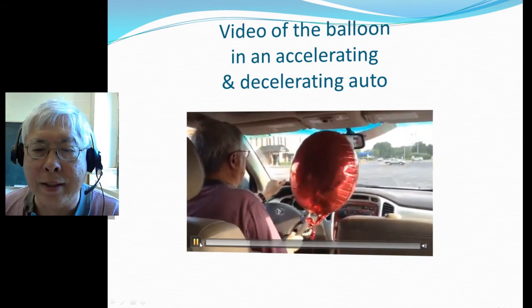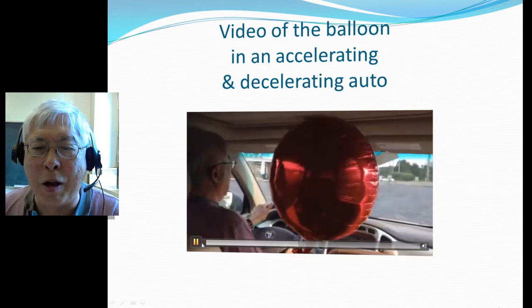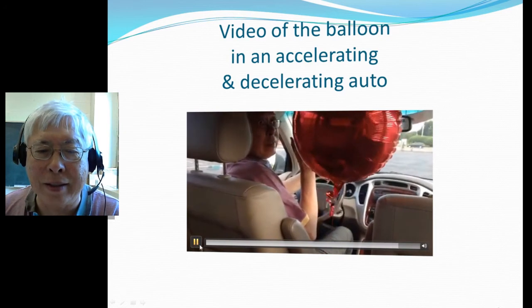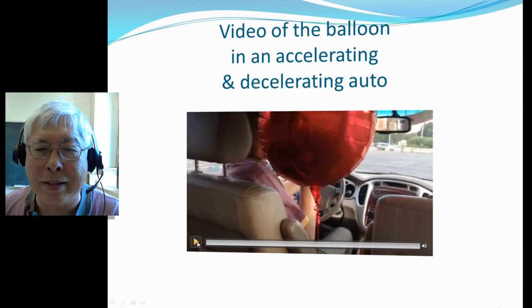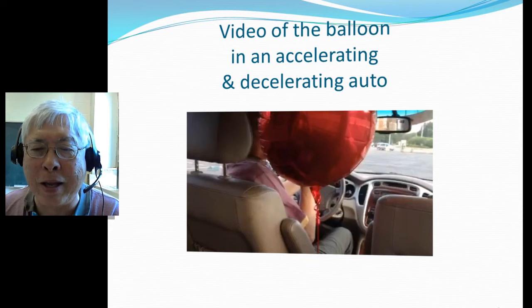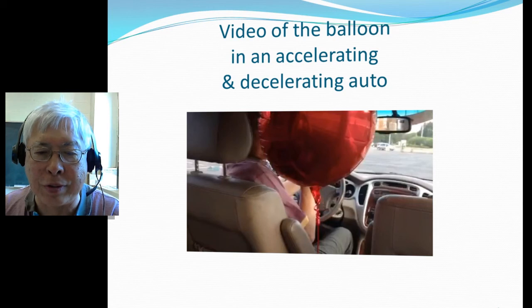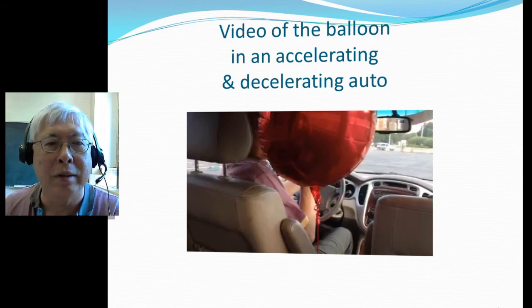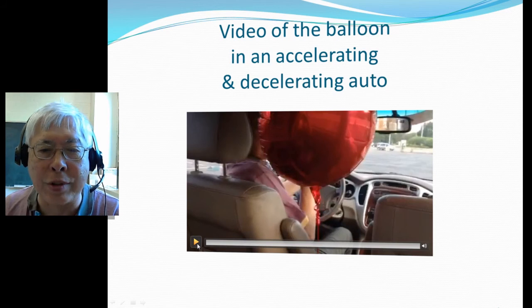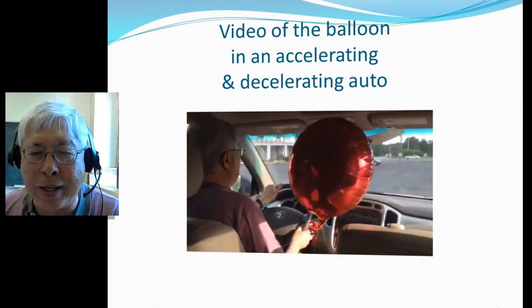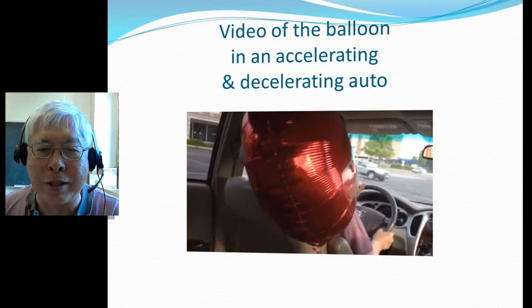Okay, I'm accelerating and the balloon leans forward, then I'm trying to brake and the balloon leans backwards. It looks like actually the balloon behaves somewhat counter-intuitively. Normally you would expect something to lean backwards, but it's actually forward. Let's watch it again. Okay, first I'm going to accelerate and the balloon leans forward, then I put the brake on and then the balloon actually leans backwards.